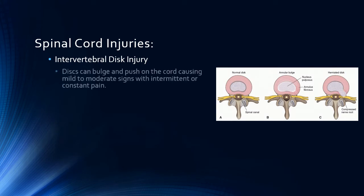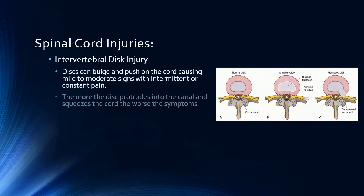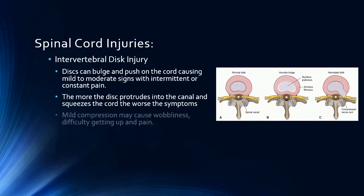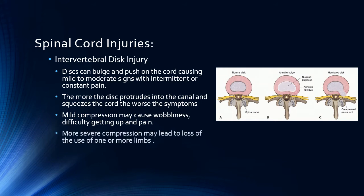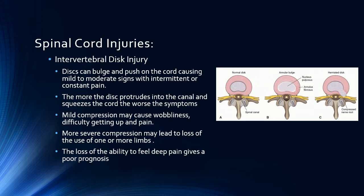The degree to which the disc bulges or ruptures in the spinal canal determines the severity of the symptoms your pet is experiencing. Mild compression may cause your pet to walk wobbly or like they are drunk, due to the compression blocking messages from the leg to the brain about where the pet is placing the limb. Mild compression is generally associated with difficulty getting up and down and pain, which can vary from intermittent to constant. More severe compression may lead to reduced function in one or more limbs, depending on the location of the disc rupture. Very severe compression will result in loss of deep pain sensation, which yields a poor prognosis for recovery.